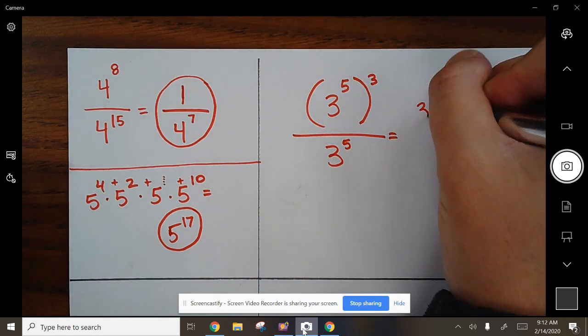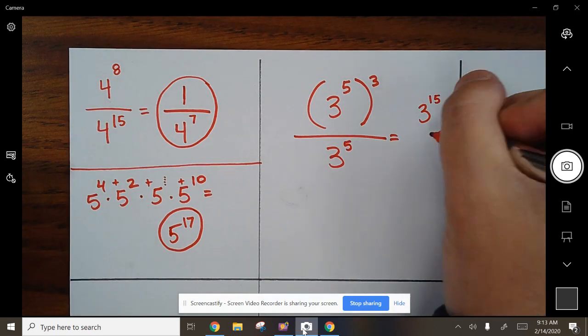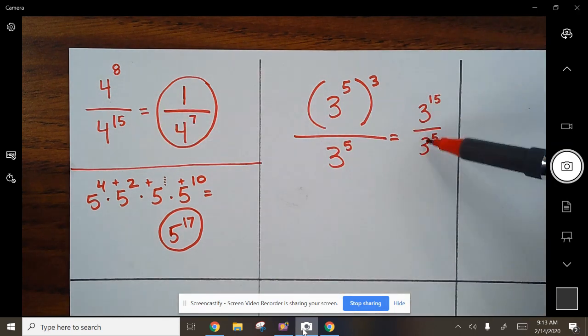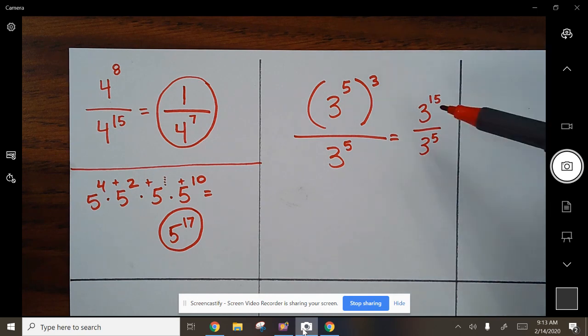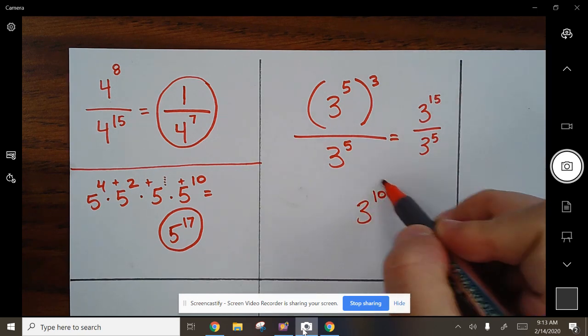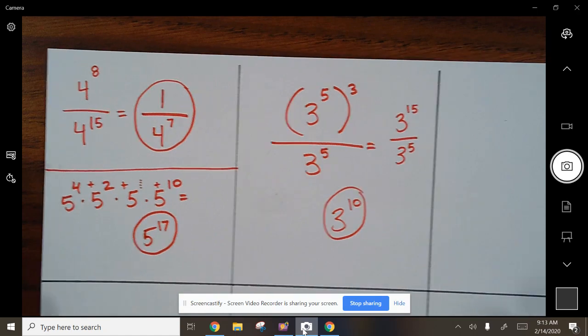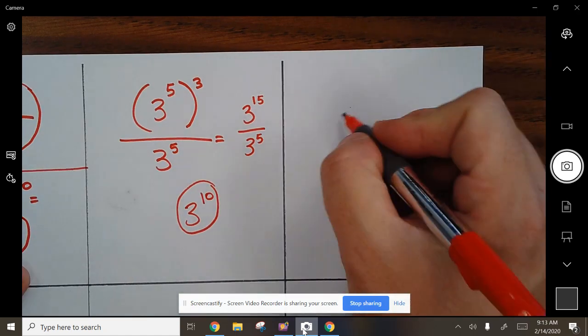You're going to deal with this parenthesis and this multiplication up here. You need to know this is multiply, so it's going to be 3 to the 15th all over 3 to the 5th. Now there's a battle going on. Who wins the battle? The top wins, but these 5 take out 5 of those, so it's 3 to the 10th.